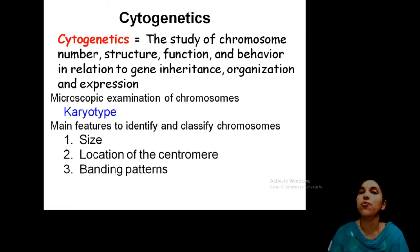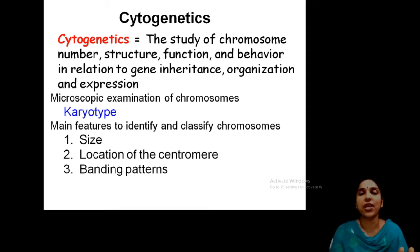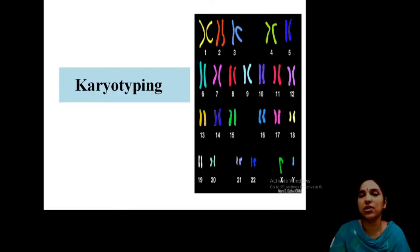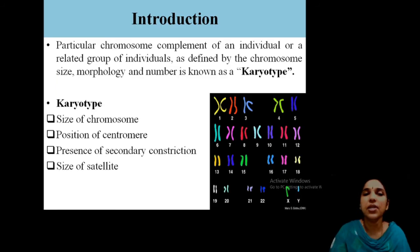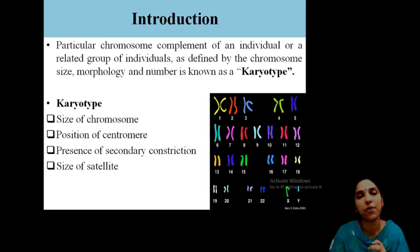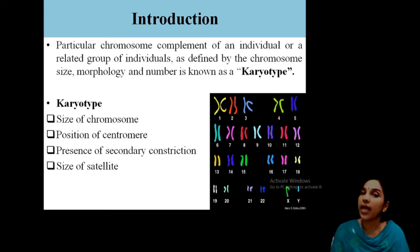Today we are moving to discuss an important method: karyotype. Karyotype is identifying and classifying chromosomes based on size, location, and banding patterns. Every organism has a unique chromosome number. The chromosome complement of an individual or related group of individuals is defined by chromosome size, morphology, and number. This methodology is known as karyotype.